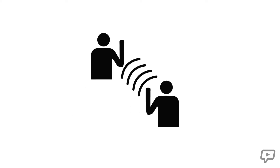Every sound has a source and a receiver. The shortest example of this is when two people have a conversation. One person creates sound waves with their voice and the other person receives the signal through their ears. That path between the waves being created and the eardrum capturing them is the simplest example of signal flow.